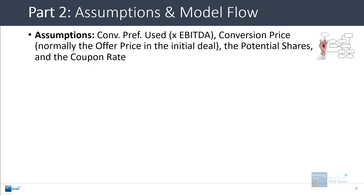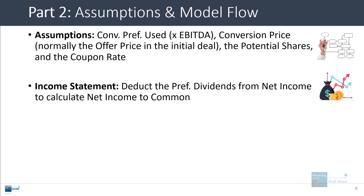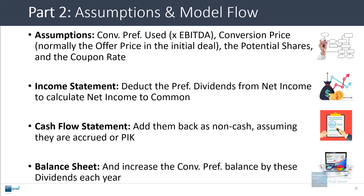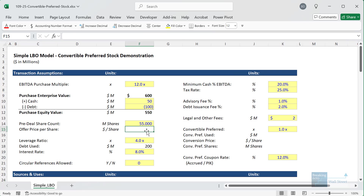We need to know how much convertible preferred we're using, what the conversion price is, the potential shares, and the coupon rate. On the income statement we'll deduct the preferred dividends from net income to get net income to common. We'll add them back as a non-cash item on the cash flow statement — just like paid-in-kind interest — and on the balance sheet the convertible preferred balance will increase by these preferred dividends each year.